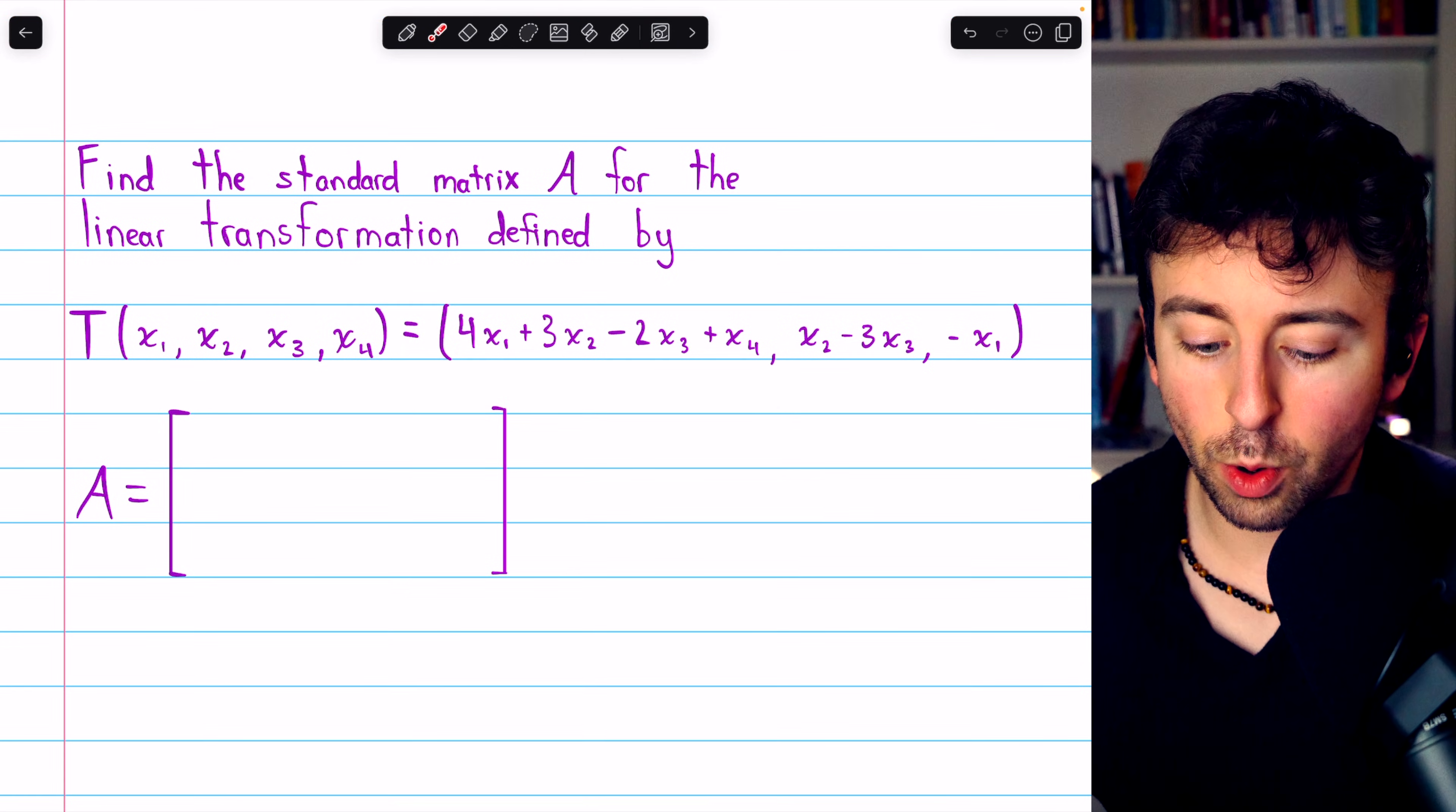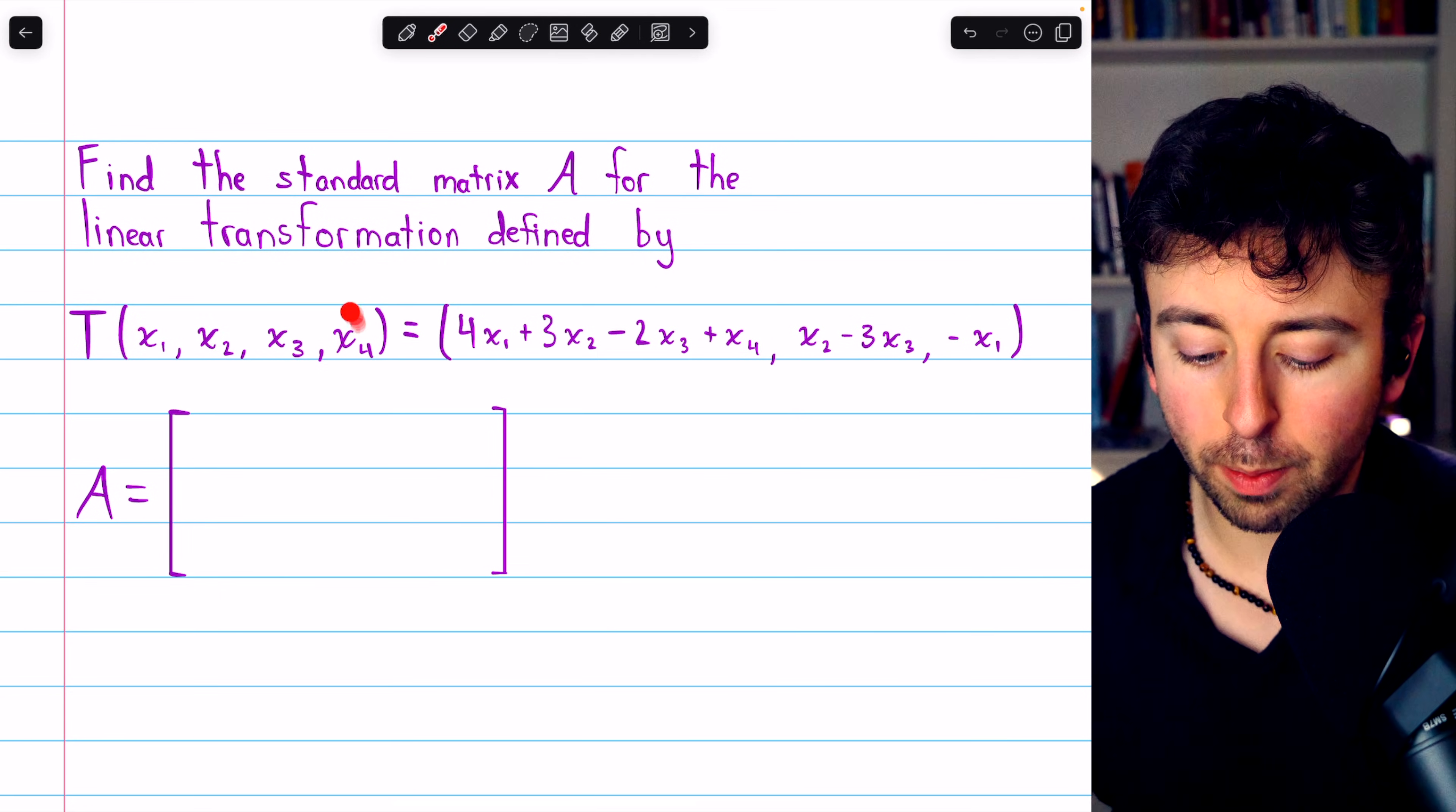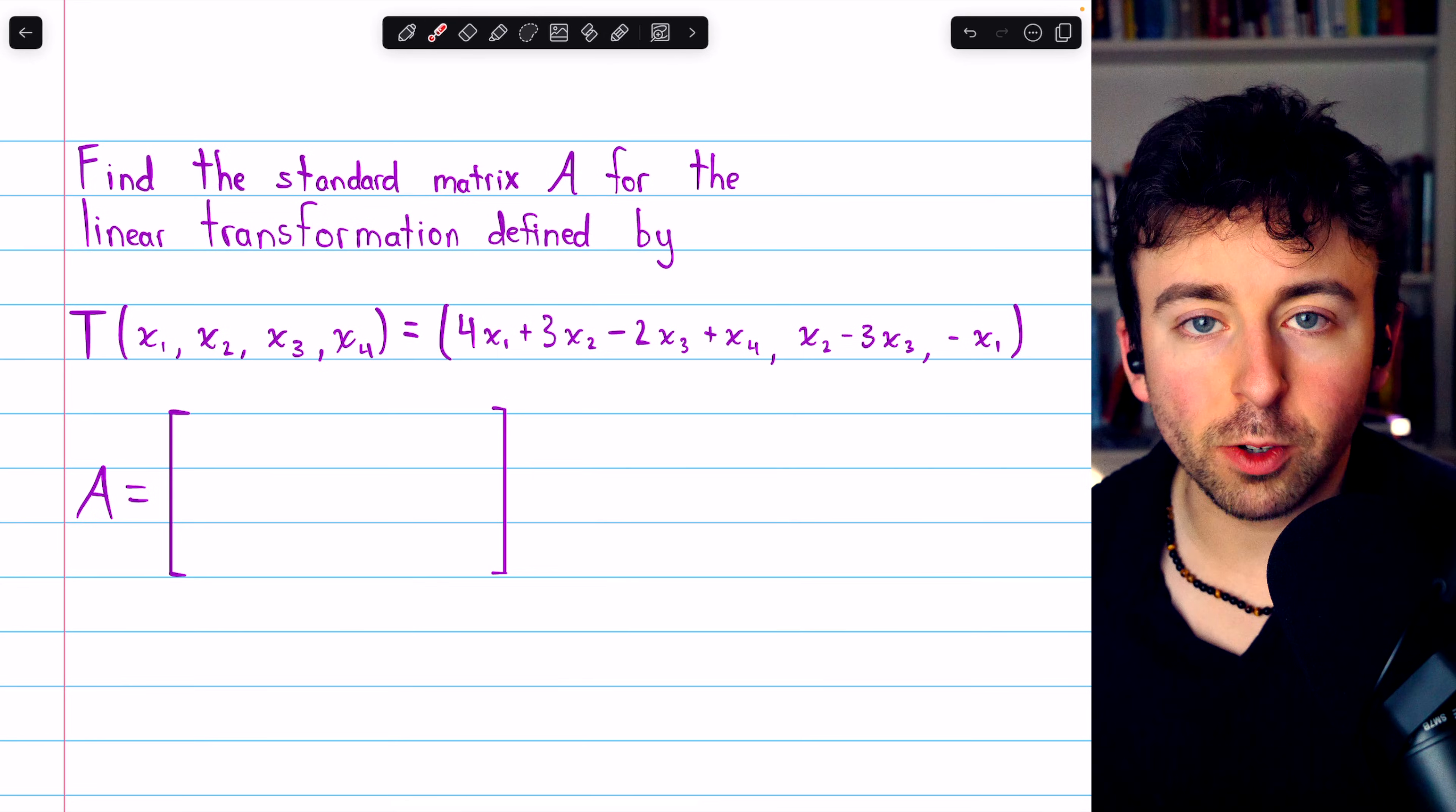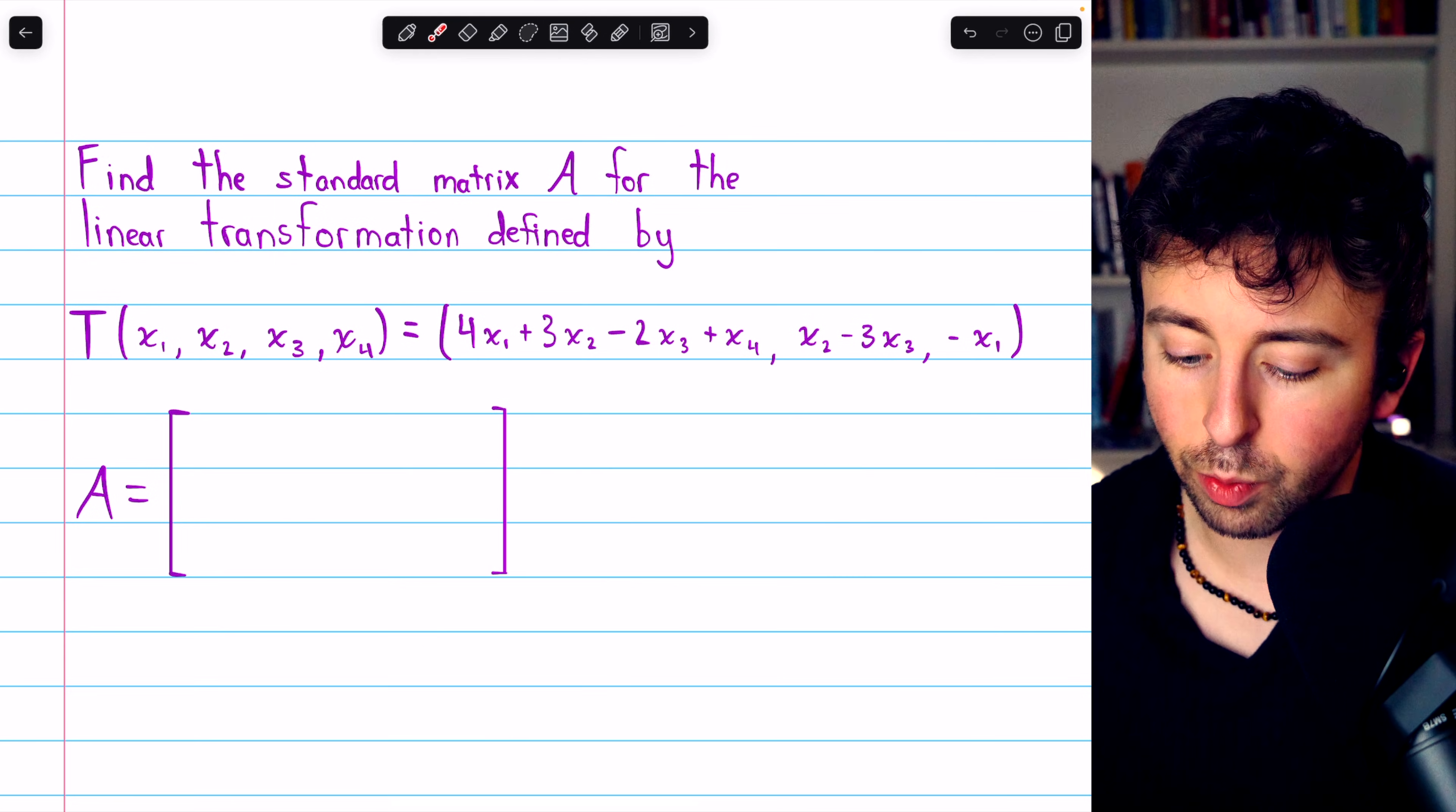Let's do another example nice and quick. Find the standard matrix A for the linear transformation defined by this equation. This transformation T takes vectors from R^4 and sends them to R^3. For the first column of the standard matrix, we just look at the coefficients of x1 in the transformation equation: 4, 0, and negative 1.